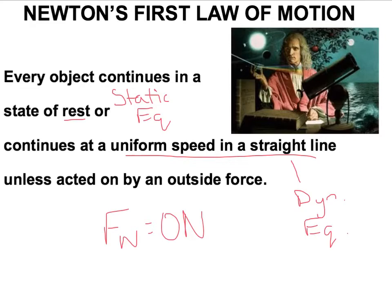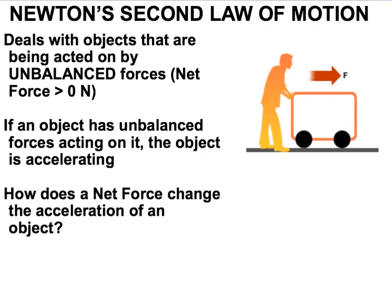Newton's second law deals with what if the net force is not zero Newtons. And if the net force isn't zero Newtons, then what's happening is the object is being acted on by an outside force, or an unbalanced force.